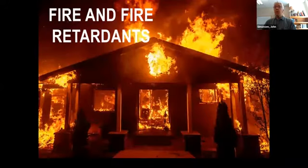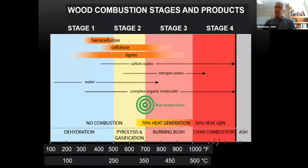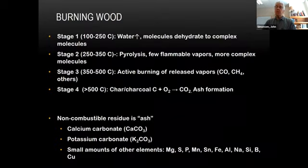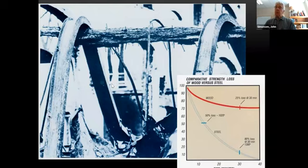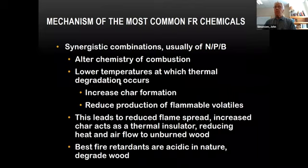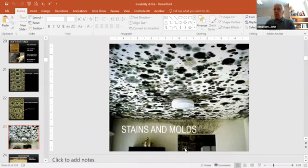Then we switched to fire: interesting facts about how fire works, the different phases or stages that wood goes through when it burns. Wood can actually be preferable to steel in fire, depending on the situation. We briefly talked about fire retardants — they're usually synergistic combinations of nitrogen, phosphorus, and boron. The chemistry is listed as P₂O₅, but it's not literally P₂O₅ — it's some phosphorus compound expressed as the chemical equivalent of P₂O₅.